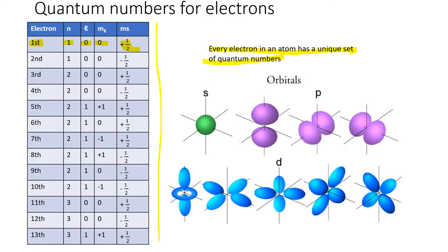For the second electron, we can still place it in the first energy level: n equals one, l equals zero, and m-sub-l equals zero. The first three quantum numbers are identical to the first electron, so the fourth must be different. Since the first electron used plus one-half, the second electron must have m-sub-s of minus one-half. Its quantum numbers are: 1, 0, 0, minus one-half.